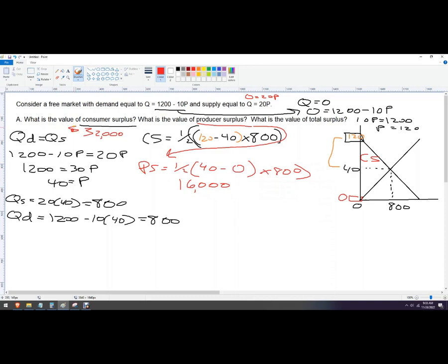Both of these, by the way, the units are in dollars or whatever currency you're using. Then I'm going to add for total surplus. Total surplus is just consumer surplus plus producer surplus. So I'm going to add 32,000 plus 16,000 and I get 48,000 is the value of the total surplus.